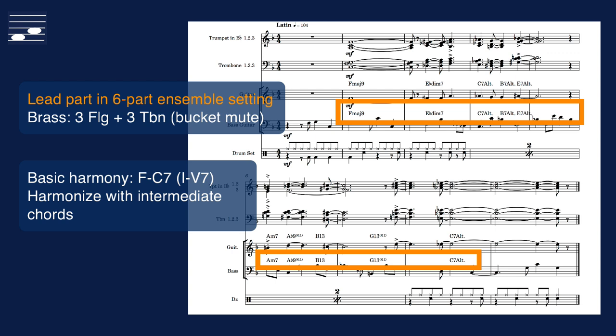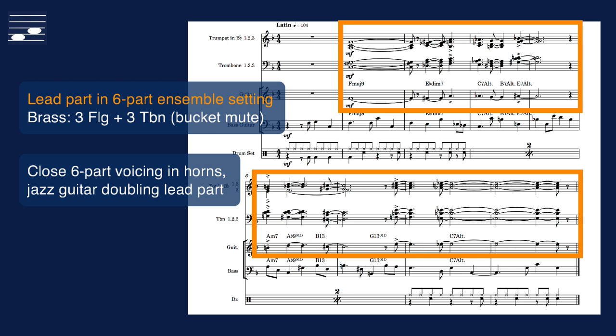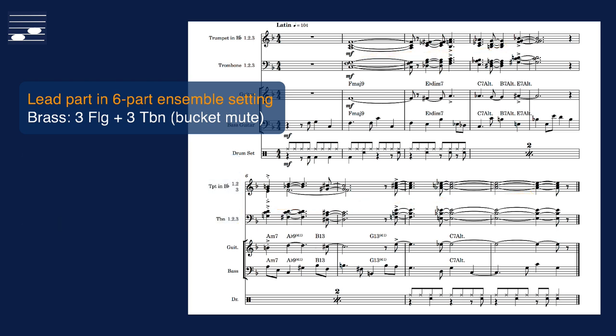Non-diatonic lead pitches will be harmonized with intermediate extended chords, another technique discussed in my arranging book. The result is a six-part closed voicing for brass section, with jazz guitar doubling the lead flugelhorn. This relaxed Latin mood setting has a gradually ascending lead part, with a mild climax and more open voicing near the end. This demonstrates how dodecaphony can be turned into contemporary jazz.